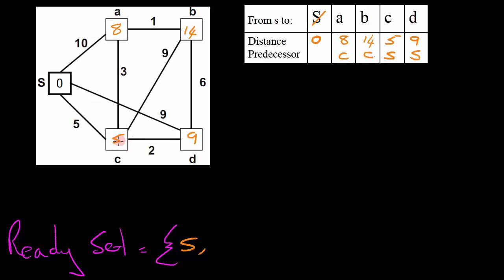The last node connected to C is node D. We take the distance value of C, which is 5 at this stage, add the distance of 2, and get a new distance value of 7. We update the distance value for D in the distance table to 7, and its predecessor is C. Since we are now finished with node C, node C is added to our ReadySet.